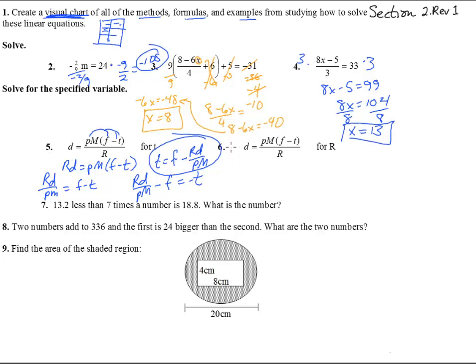Okay, number six. We're trying to get this for r. So kind of the same thing, we've got to get it off the bottom. But we're looking for that now and watch what happens here. r d equals p m times f minus t. f minus t. Now to get r by itself, just divide by d and we're done. r equals p m f minus t all over d. And that's all we had to do. We didn't have to worry about the parentheses or distributing anything like that.